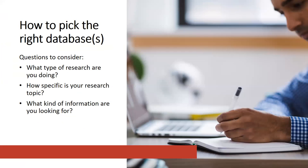So there are lots of databases and lots of options. How do you pick the right database? There are some questions you could consider. Firstly, what type of research are you doing? What kind of information are you looking for? What questions are you trying to answer? For instance, if you're looking to do background research on a topic, you might want to start with an encyclopedia database. An example would be Encyclopedia Britannica Academic Edition, and Credo Reference are also really good for background research.